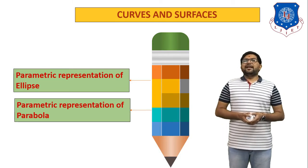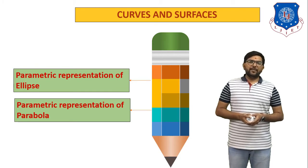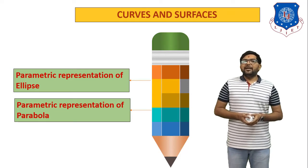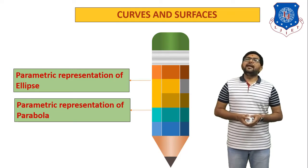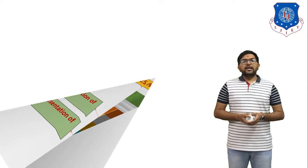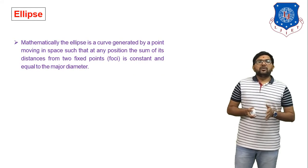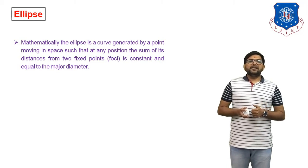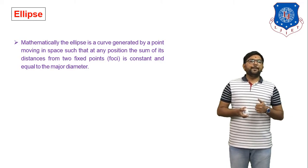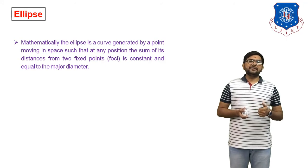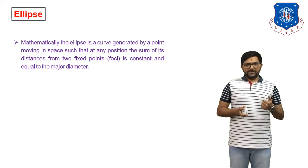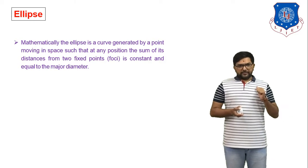The equation of an ellipse is x-squared upon a-squared plus y-squared upon b-squared equals 1, where a and b indicate the major axis and minor axis. We have to use this fundamental here. Mathematically, an ellipse is a curve generated by a point moving in space such that at any position the sum of its distances from two fixed points is constant and equal to the major diameter.